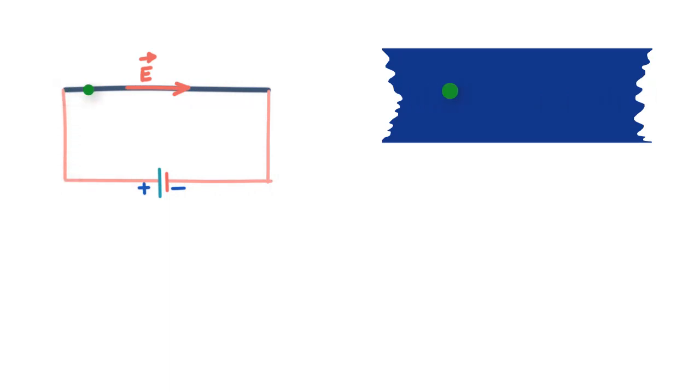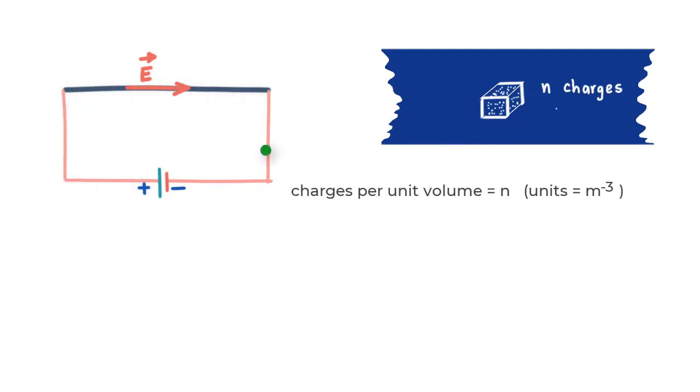This here is the conventional current. Now let us say that there are N charges per unit volume, which we call as the charge density, and the units would therefore be per meter cube. Because you got to remember, N is just a number. You don't say coulomb per meter cube, it is just per meter cube.